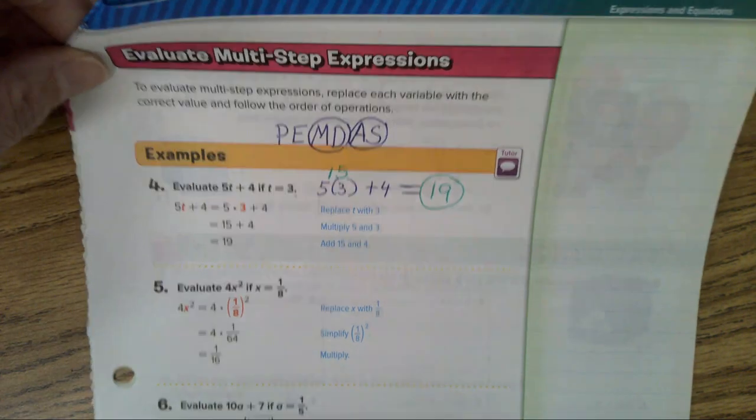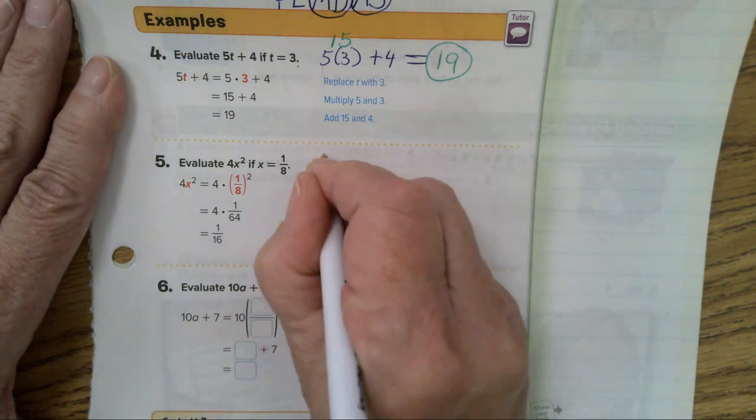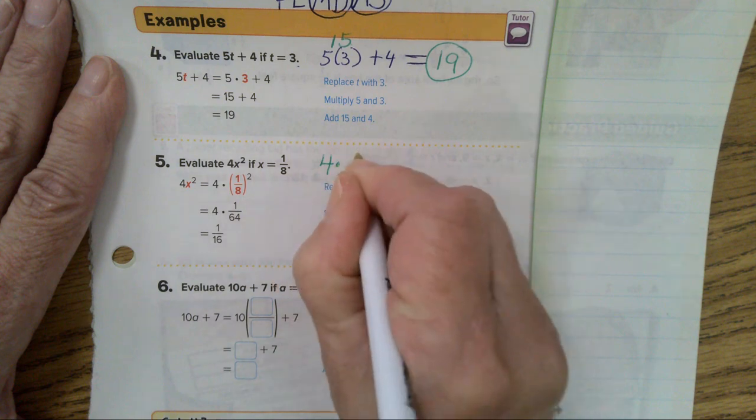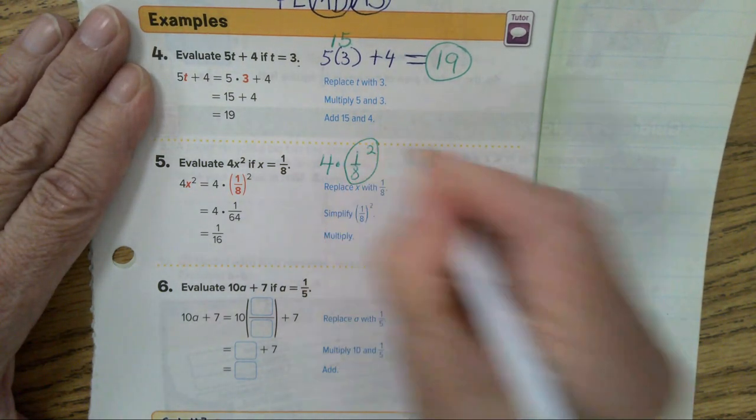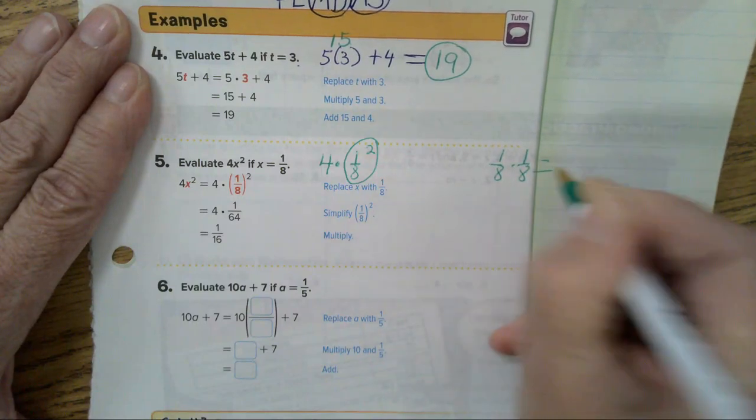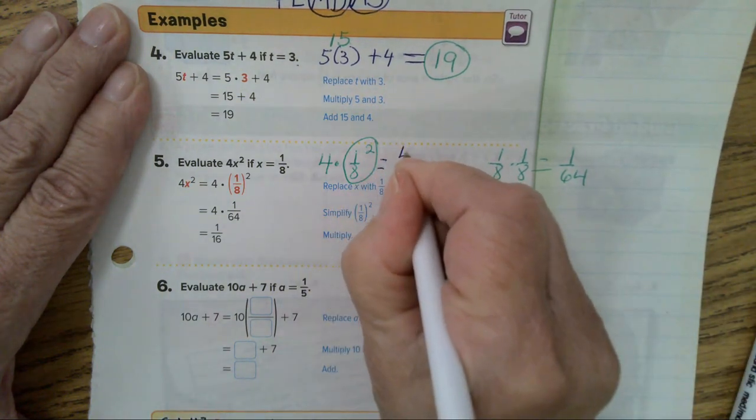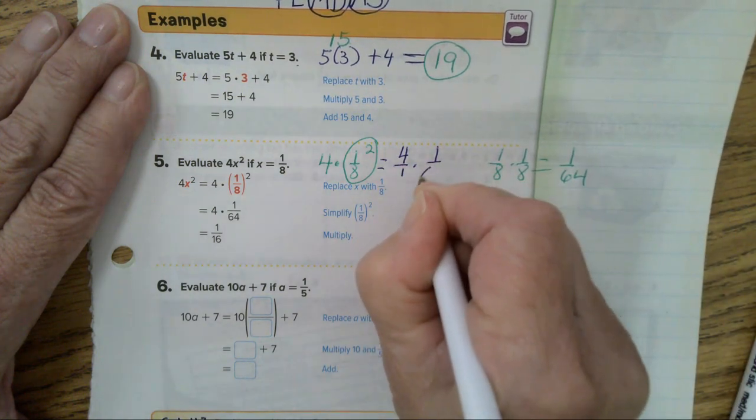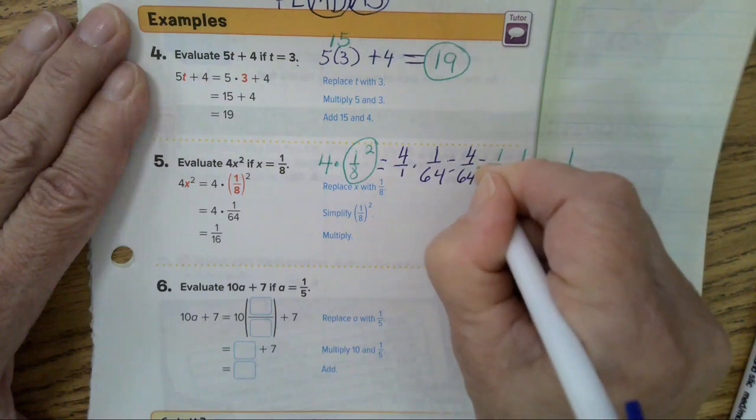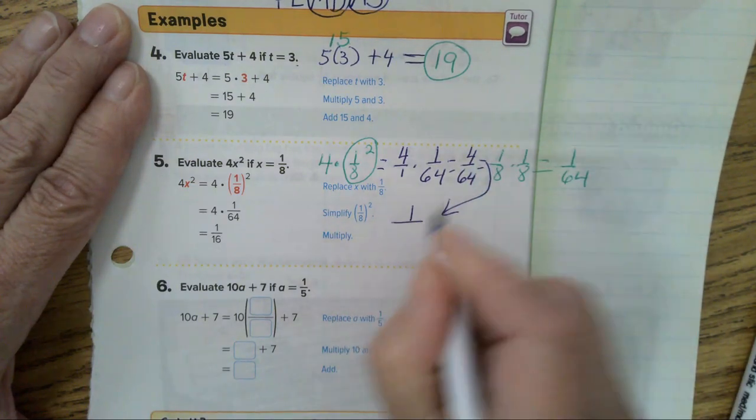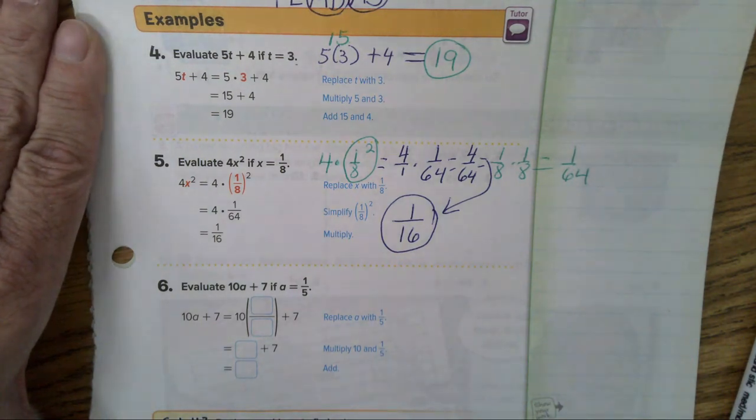Now, let's go on to number 5. Here, we have an exponent. We're going to replace x with 1 8th. So, this is 4, I'm going to put a dot this time, times 1 8th to the second power. 1 8th to the second power means 1 8th times 1 8th. That equals 1 over 64. So, this will equal 4 over 1 times 1 over 64. That will equal 4 over 64. And when you simplify it, 4 divides 4 once. 4 divides 64 16 times. And it simplifies to 1 16th. They're getting a little harder on this page.